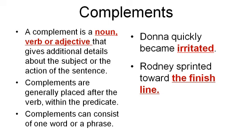Another example: Rodney sprinted toward the finish line. Rodney is the subject. Sprinted is the verb. Now we have the complement — toward the finish line. The finish line is a noun that completes this sentence. Without it we would just have Rodney sprinted toward — what did Rodney sprint toward? The finish line. So remember, complements complete the sentence and give additional detail about what is happening. In this case, the finish line is a noun functioning as the complement. In the first sentence the complement was an adjective; in this sentence the complement is a noun.